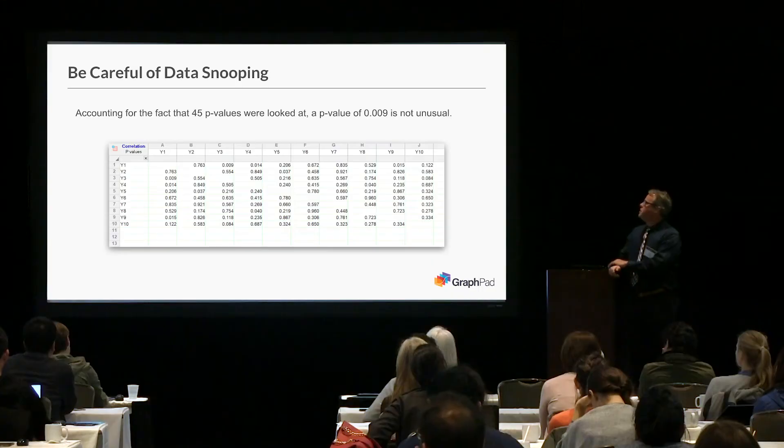So this is called data snooping. If you were to pick that off and only report that number without accounting or adjusting for all the things you looked at — just want to point that out.